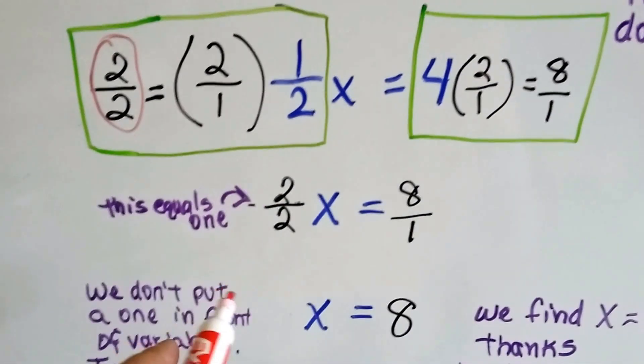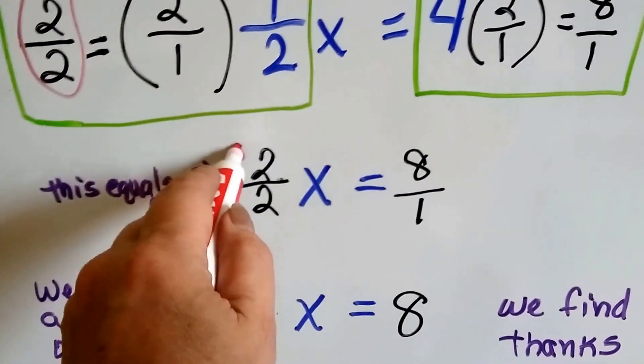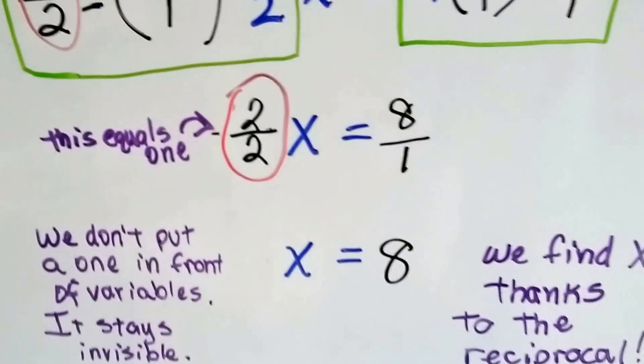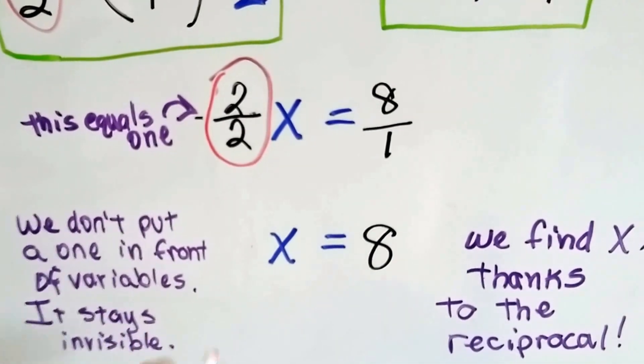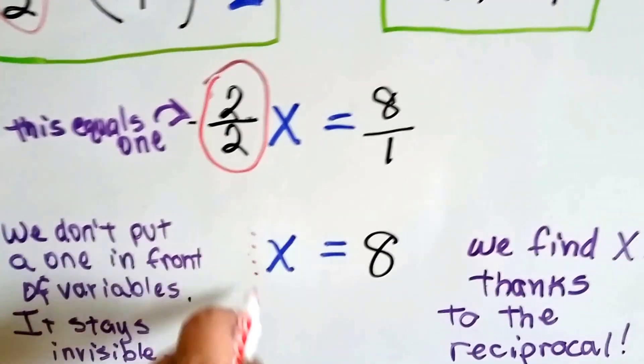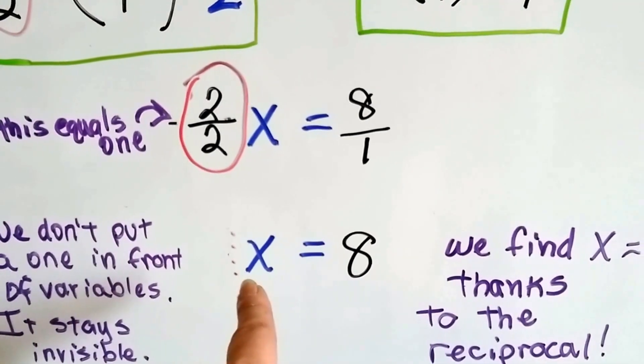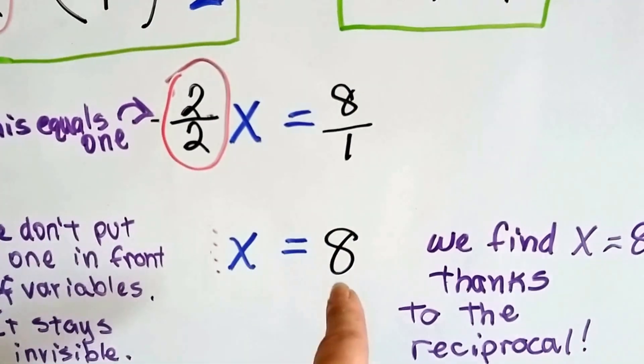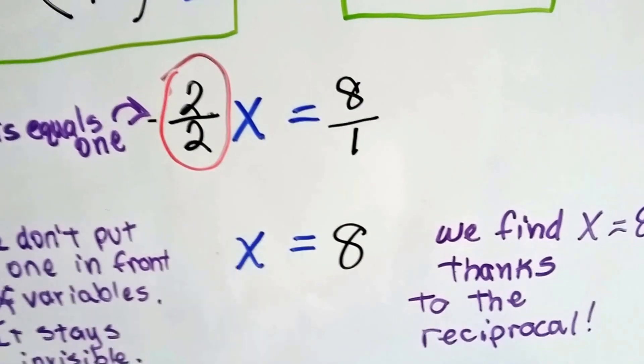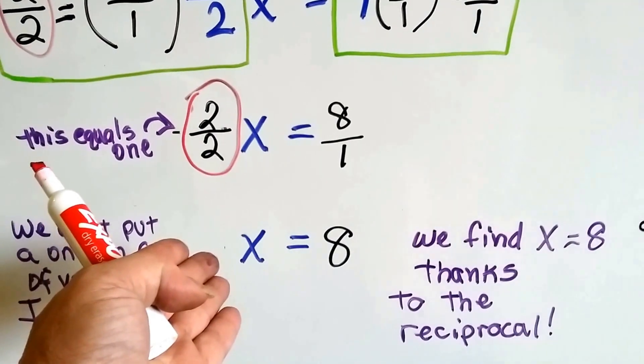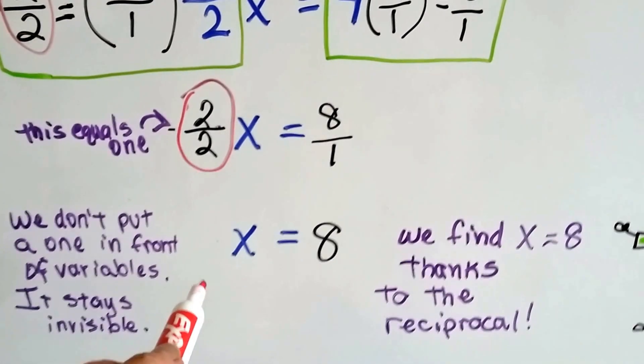Well, now all we need to do is simplify. This equals 1. And we don't write the 1 in front of the variables. It stays invisible. There's an invisible 1 in front of a standalone variable. 8 over 1 equals 8, so we can see there's 1x there. We don't need a 1 in front of it, so it's usually not written.